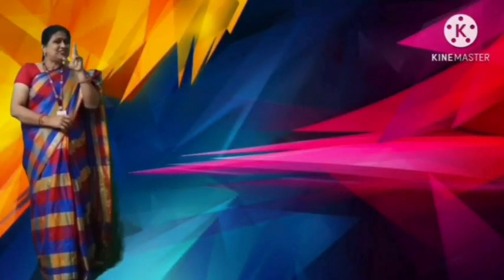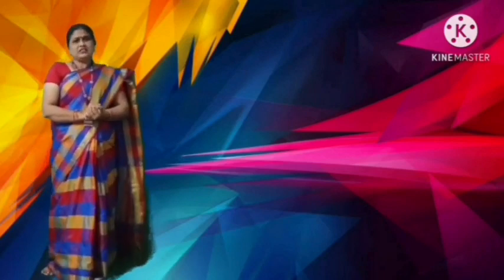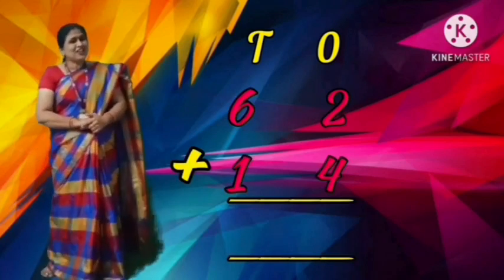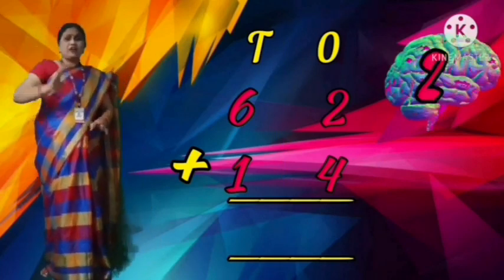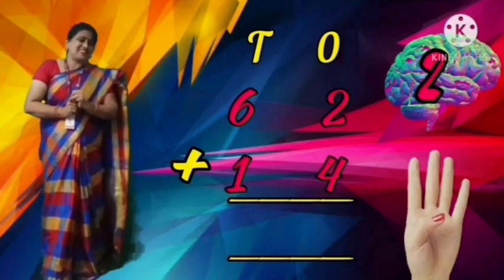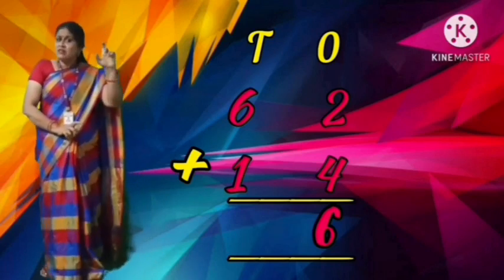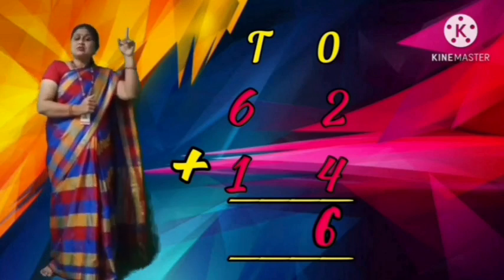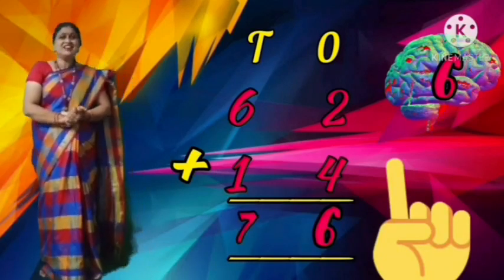Now we are going to do 2-digit addition — a 2-digit number with a 2-digit number. 62 plus 14. Which place do we add first? The ones place. So 2 plus 4: 2 in the mind, 4 in the finger. After 2: 3, 4, 5, 6. Write 6 in the ones place. In the tens place, 6 tens and 1 ten: 6 plus 1, after 6 is 7. The answer is 76.